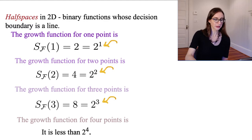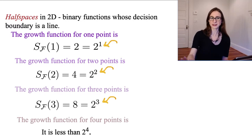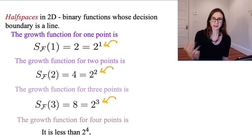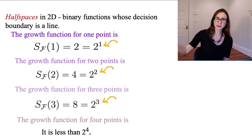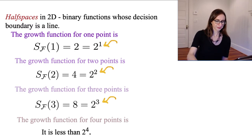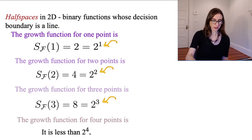I want to go back to half spaces for just a minute to make the point that the growth function is often less than 2^n. If you have n points, the total number of ways you can classify them is at most 2^n. That's the total number of ways you can divide the data into two groups — every possible set of class labels. So 2^n means you can label the data any way you want and find a classifier that classifies it perfectly. 2^n is the maximum for any function class.